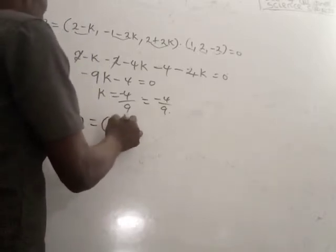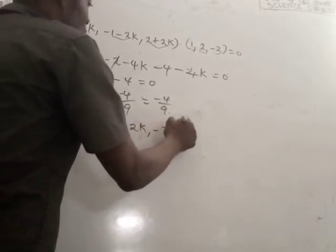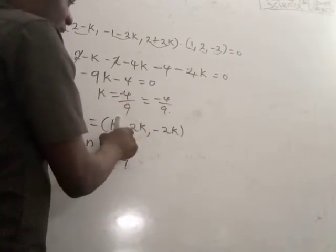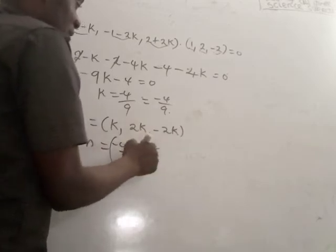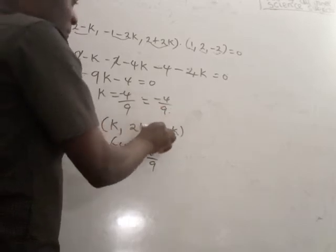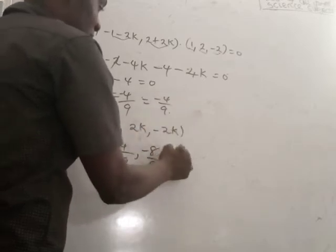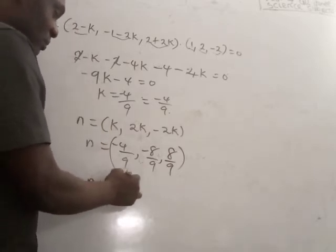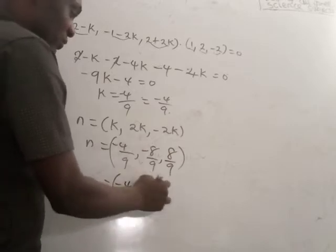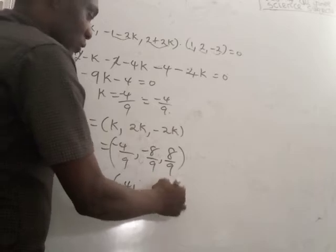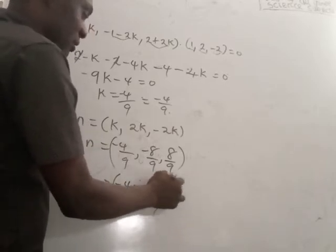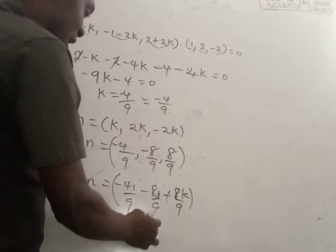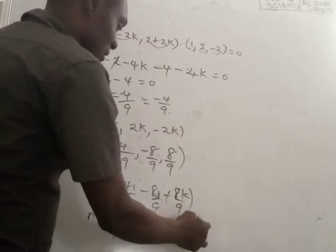Recalling that vector N equals (k, 2k, -2k), substituting k equals minus 4 over 9 gives N equals (-4/9, -8/9, 8/9). Writing this in standard form: N equals 1/9 times (-4i minus 8j plus 8k).